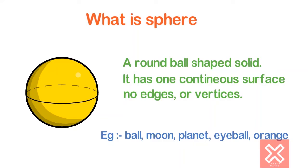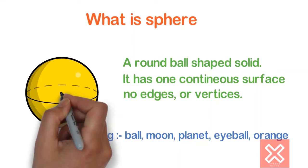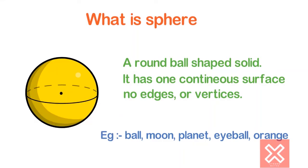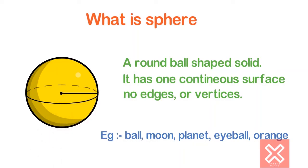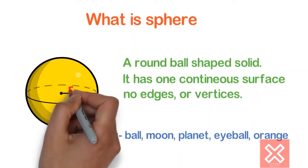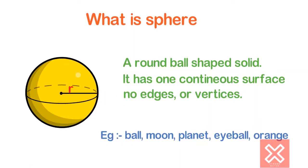If you draw a straight line from the center to any point of the curved surface, that line equals the radius of the sphere.